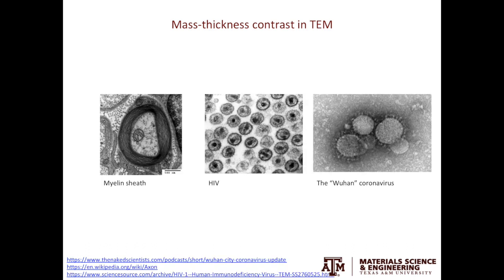A few more examples of mass thickness contrast in TEM. The first shows the myelin sheath wrapping around a neuron. The one in the middle shows HIV viruses. And the last one shows the Wuhan coronavirus, which was ravaging the city of Wuhan. Based on these examples, you can tell that mass thickness contrast in TEM is largely used by polymer scientists and biologists.